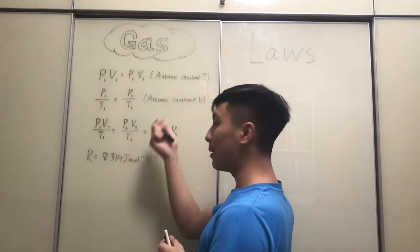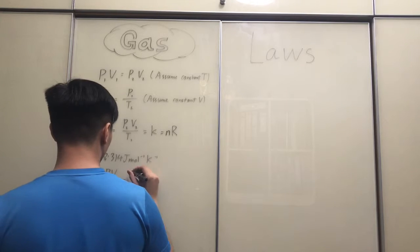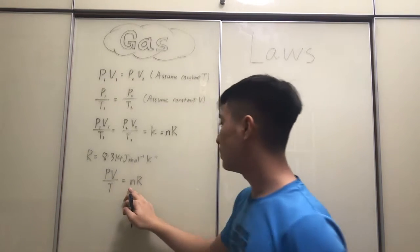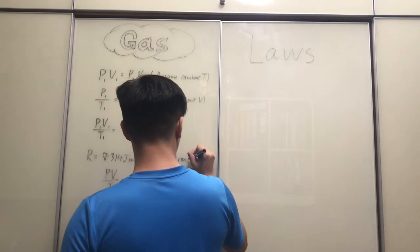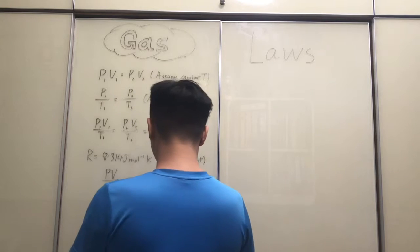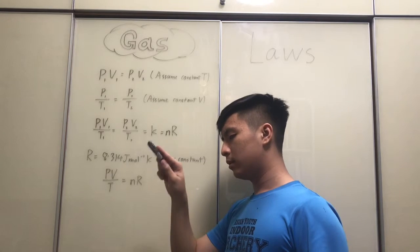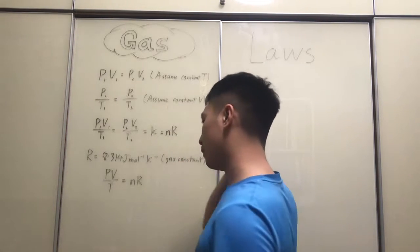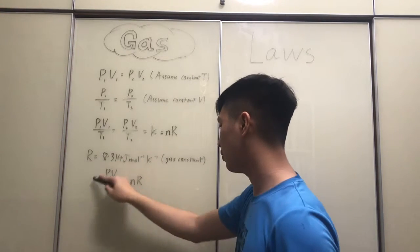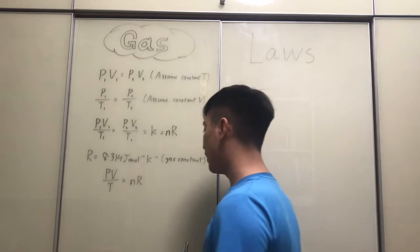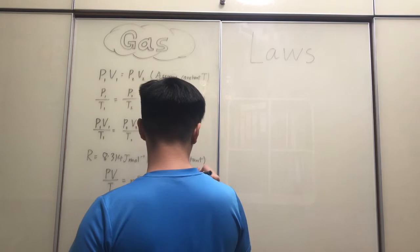So because of this constant that we've calculated, now we can actually come up with this equation here. PV over T is equal to nR, number of moles multiplied by R, the gas constant. This value of the gas constant can be found in the data booklet. I think it's on the third page of the data booklet, so you should find it quite easily. Given this equation here, PV over T equals nR, we can then rearrange the equation into this: PV equals nRT.